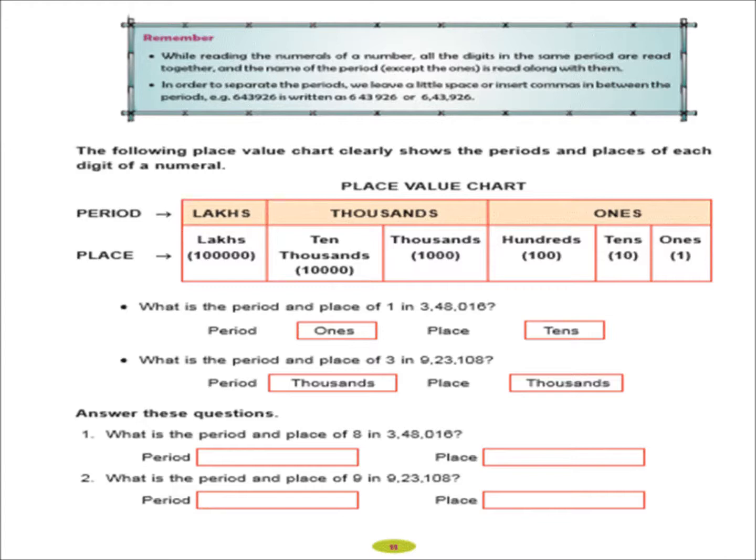Here, next topic is place value chart of the 6 digit number. Here, the place value chart clearly shows the periods and places of a digit of a numeral. So, you can draw it earlier. I have explained about it. And you can draw neat and clean chart. You will do it. Next, what is the period and place of 1 in 3,48,060? Here, you can say that period is 1s and its place is 10s. Then next, what is the period and place of 3 in 9,23,108? So, you can say that period is 1000s and place is also 1000s.